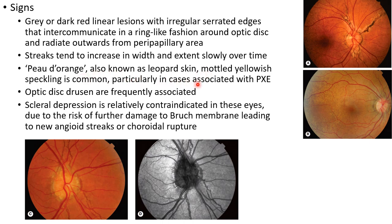The peau d'orange appearance is common and particularly seen in cases associated with pseudoxanthema elasticum. This picture shows peau d'orange appearance in a case of angioid streak. Angioid streaks are frequently associated with optic disc drusen. This picture shows angioid streaks and the associated optic disc drusen.